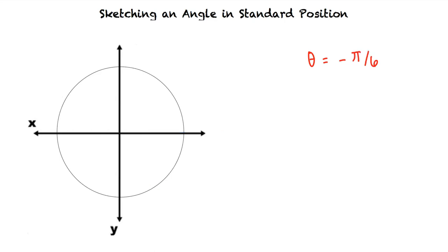Let's sketch theta equals negative pi sixth in standard position. Since the angle is negative, we rotate the terminal side in the clockwise direction. We also see that negative pi sixth is between 0 and negative pi halves. The angle is closer to 0, so we can draw our angle as follows.